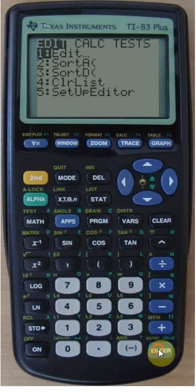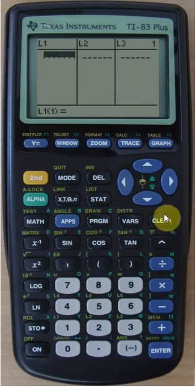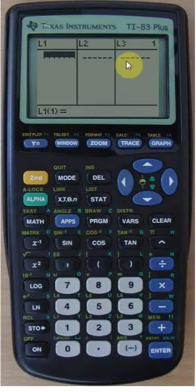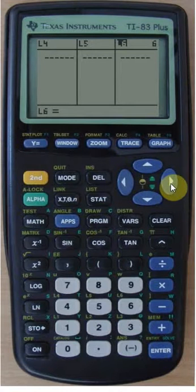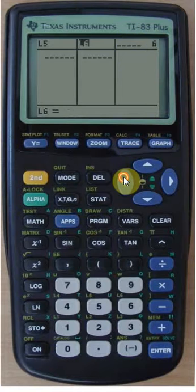So go to stat and then 1 or edit. Now you could use list 1, 2, 3, that's what I'm going to be doing. You could also go one to the left and one to the right to actually enter a named list yourself. Simply be using list 1.